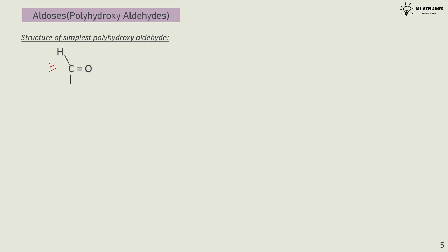Let's look at aldoses — there is a very big family of aldoses, so let's go through them step by step. The simplest polyhydroxy aldehyde: if there is an aldehyde group, and 'poly' means at least two OH groups, then you would have a CHO group and at least two carbons with two OH groups, plus the remaining hydrogens.